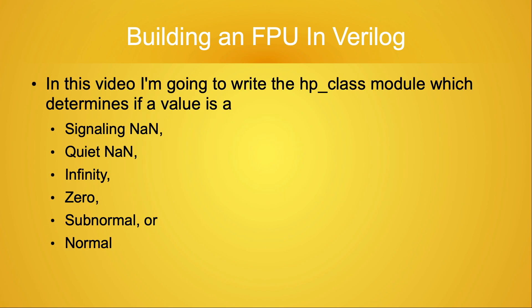In this video, I'm going to use the information about how the IEEE standard categorizes 16-bit floating point values to write a Verilog module. To review where I left off in the last video, I call this first module HP_class. Here HP stands for half precision. This module outputs six values: SNAN, QNAN, infinity, zero, subnormal, and normal.